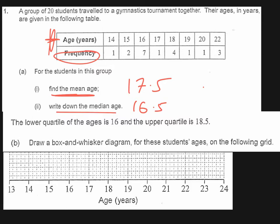The second part then: draw a box-and-whisker diagram for these students' ages on the following grid. Here, we've even been given the lower quartile which is 16 and the upper quartile which is 18.5.